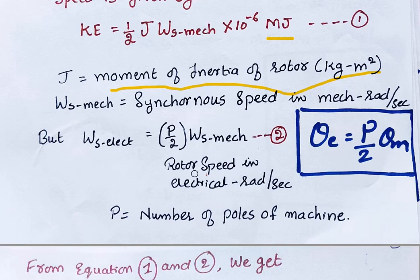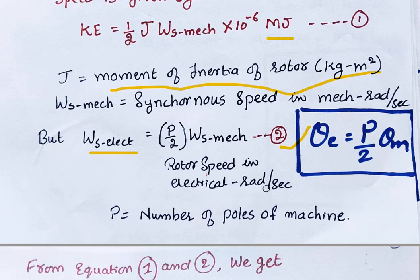To convert mechanical speed to electrical, we use the basic equation: theta_E equals (P/2) times theta_M, where theta_M is mechanical degrees, theta_E is electrical degrees, and P is the number of poles. Similarly, omega_S electrical equals (P/2) times omega_S mechanical. This is equation number 2 — rotor speed in electrical radians per second.